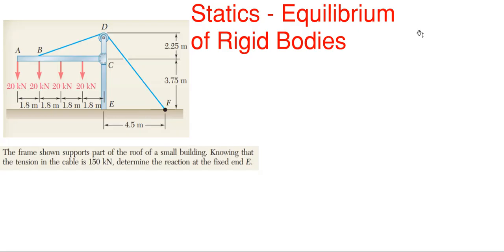We are going to be finding the reactions for the problem shown on the screen. What we have here is a frame that supports part of a roof of a small building. Knowing that the tension in the cable is 150 kilonewtons, determine the reaction at the fixed end E.